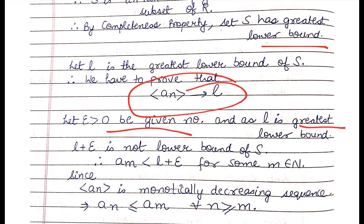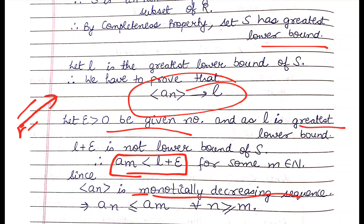If L plus epsilon is not a lower bound of set S, then there exists some element a_m in the sequence such that a_m is less than L plus epsilon. The infimum L is the greatest lower bound. Since a_n is a monotonically decreasing sequence, for n greater than or equal to m, a_n is less than or equal to a_m. Therefore, a_n is less than or equal to L plus epsilon.